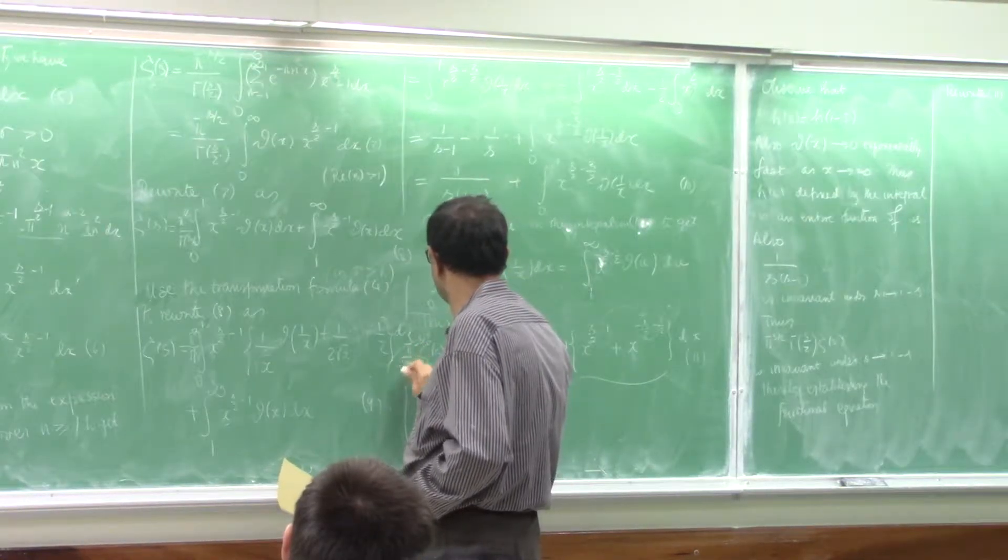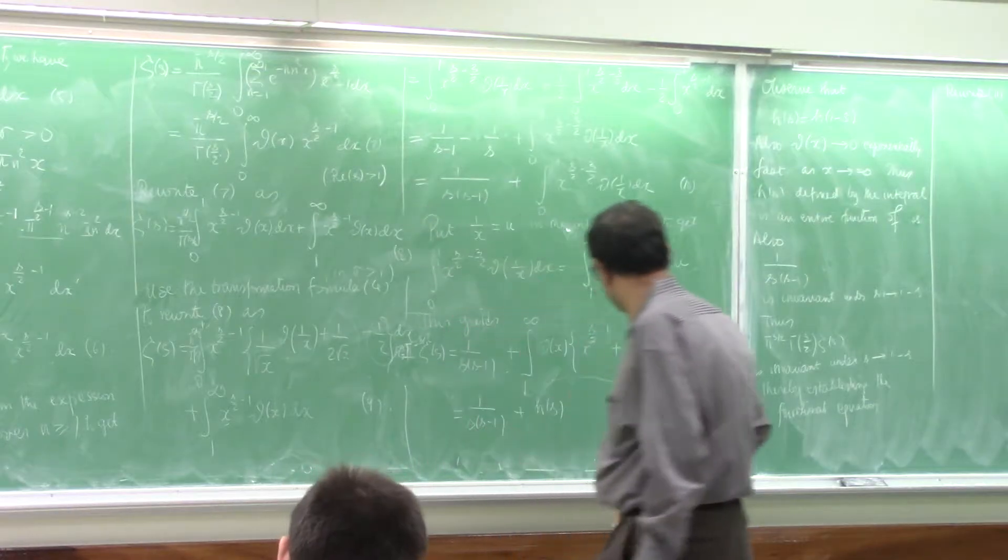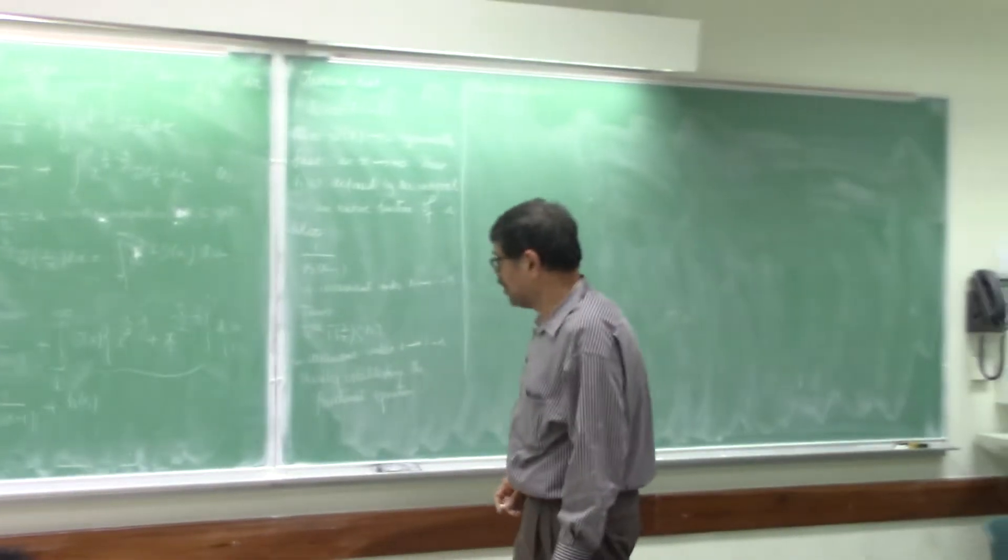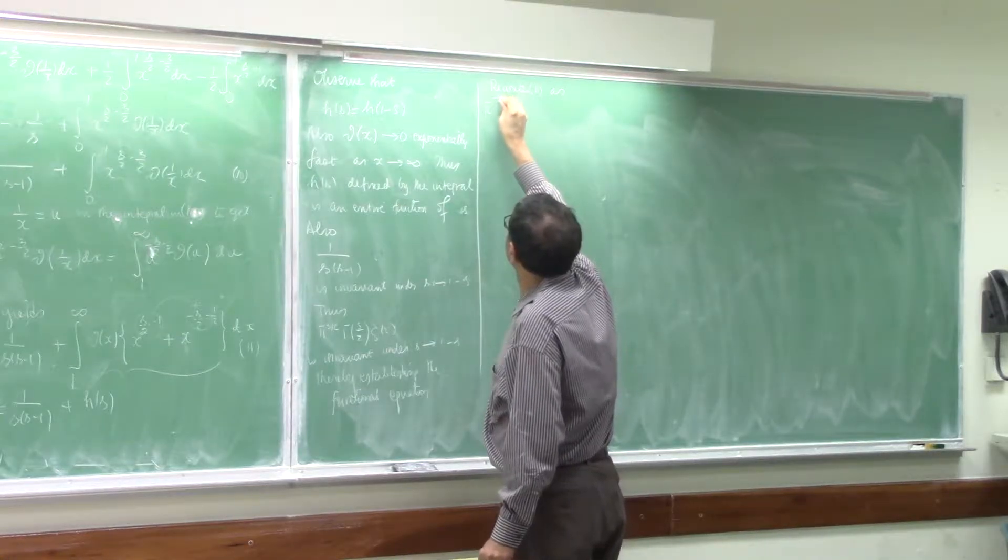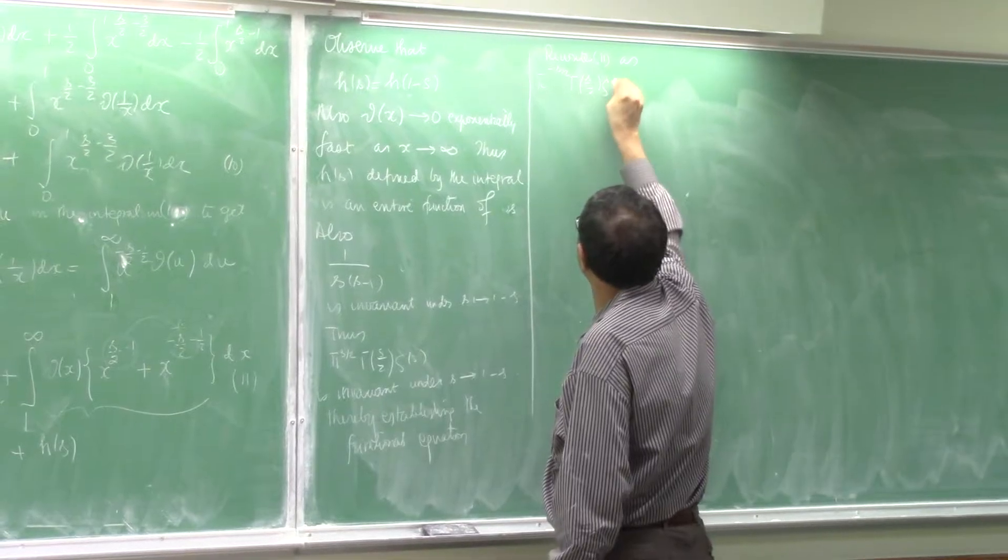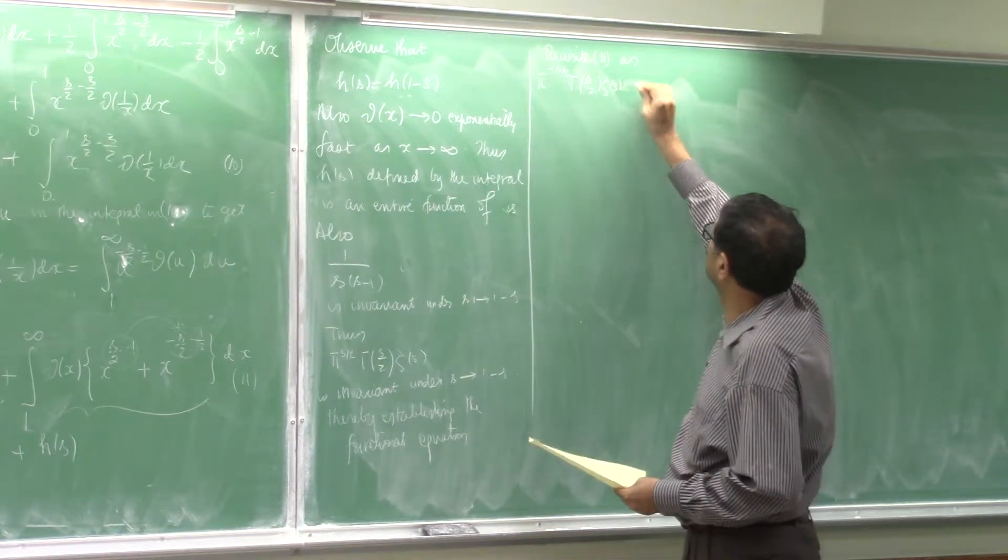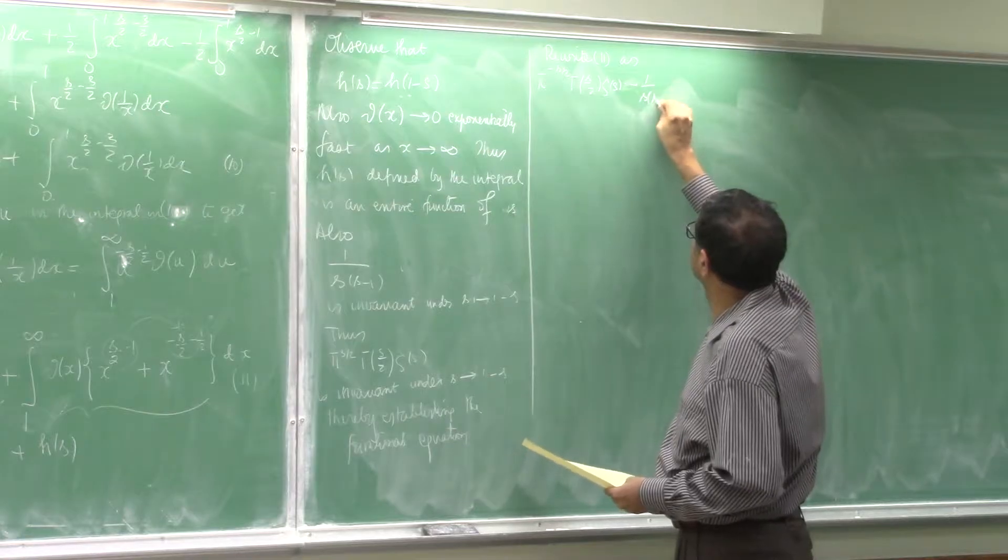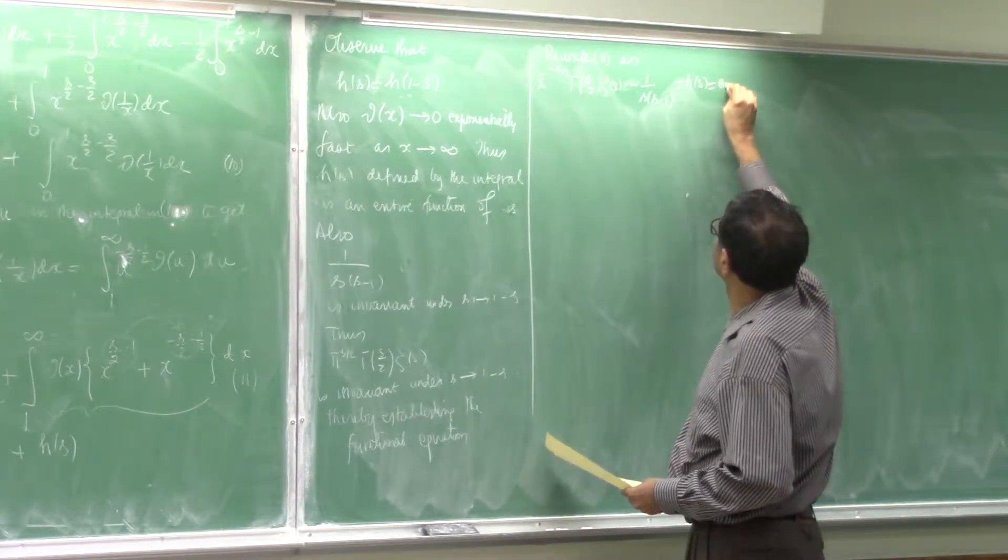Minus s over 2 gamma, that gamma has 2. Sorry about this. When I marked it. So rewrite 11 as pi to the minus s over 2 gamma s over 2 zeta s is equal to minus 1 over s minus 1 equal to h of s equal to entire.